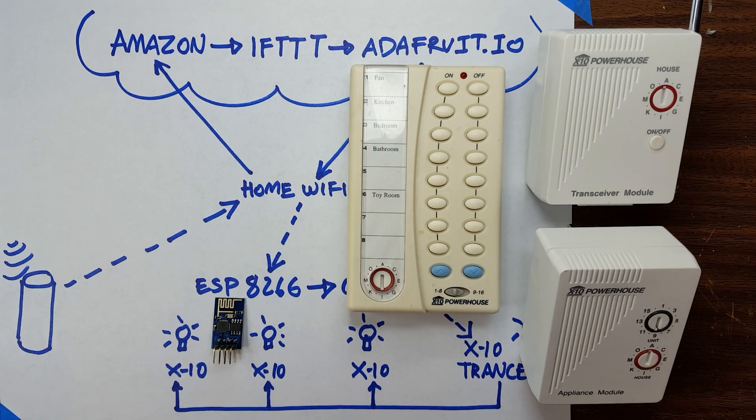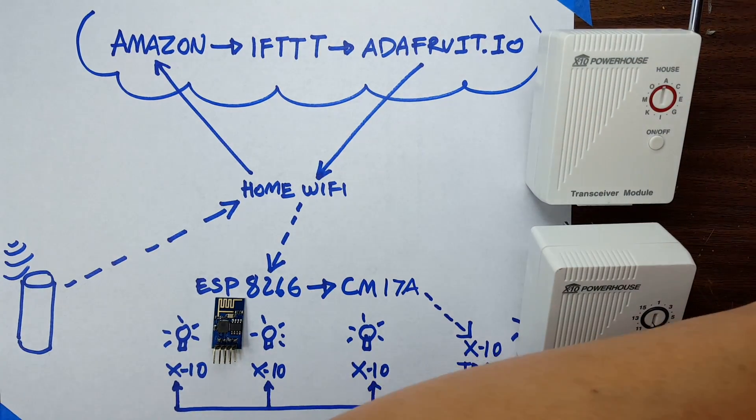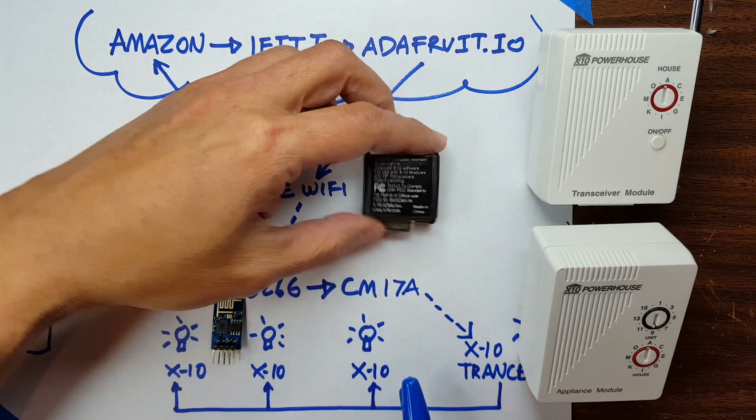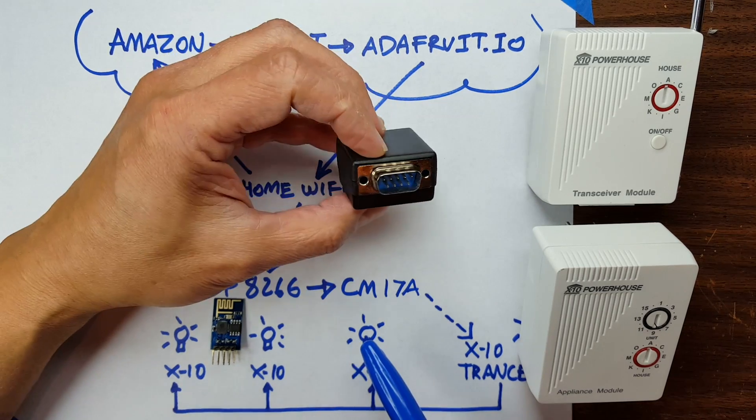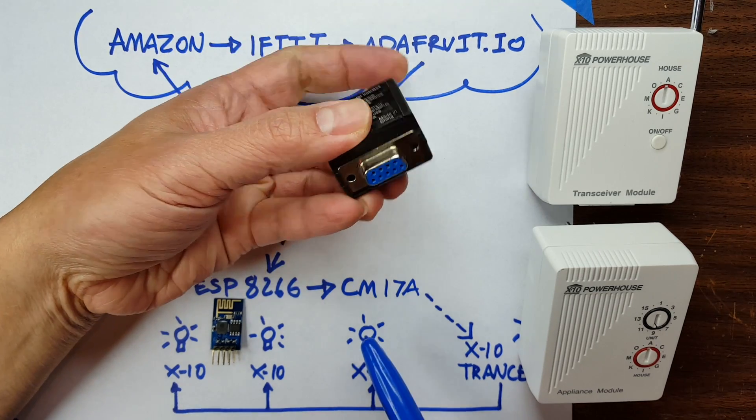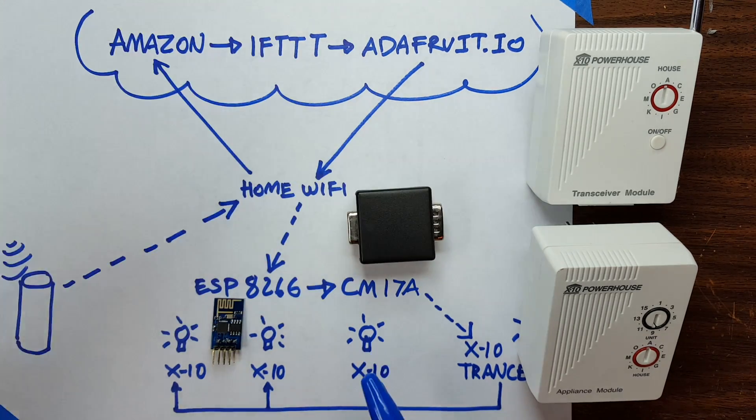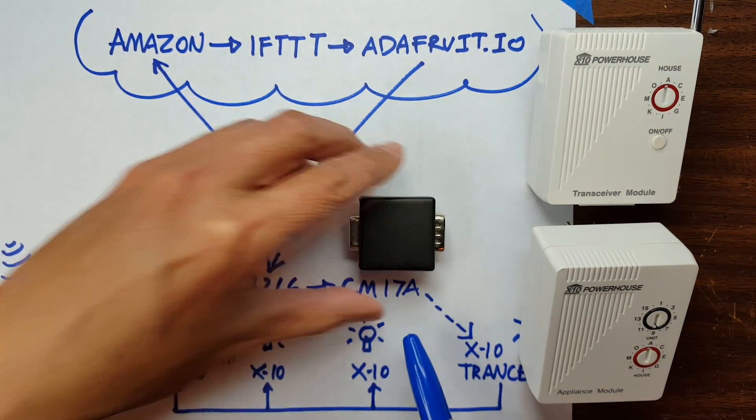So the thing that I did is basically I replaced this remote with this remote. This is called a CM17A. It is also from the olden days. Notice that it doesn't have a USB port, it actually has a serial port. I don't know how many of you actually have seen a serial port. In the olden days computers had serial ports instead of USB ports, so you'd plug this into the PC and then from the PC you could control this whole system.